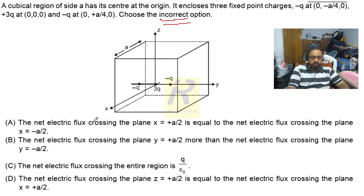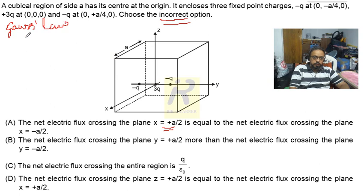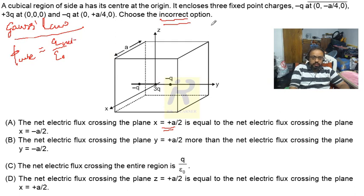Reading option A first: the net electric flux crossing the plane x = +a/2 is equal to the net electric flux crossing the plane x = -a/2. According to Gauss's law, the total electric flux through the cube is Q/ε₀, where Q is the net charge. Here we have +3q and -2q, so the net charge is +q, giving total flux = q/ε₀.